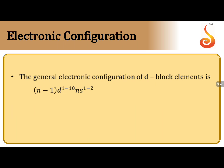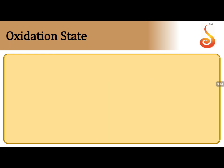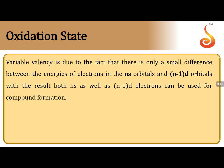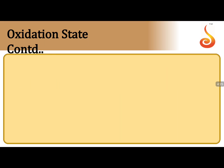The general electronic configuration is (n-1)d¹⁻¹⁰ ns¹⁻². In exceptional cases like palladium, ns can be 0, showing pseudo-noble gas configuration in the ground state. Regarding oxidation states: the ns orbitals and (n-1)d orbitals have very small energy difference, so both sets of electrons participate in chemical bond formation — this is why transition elements exhibit variable oxidation states.